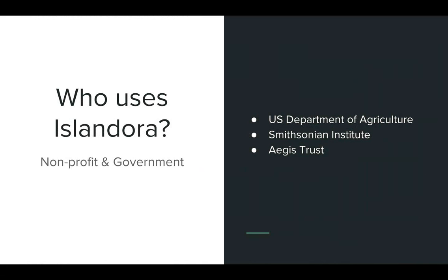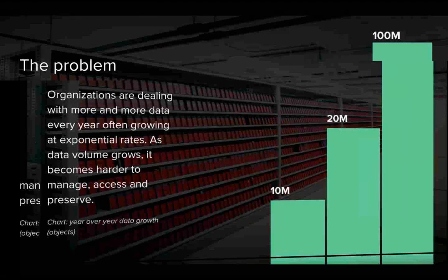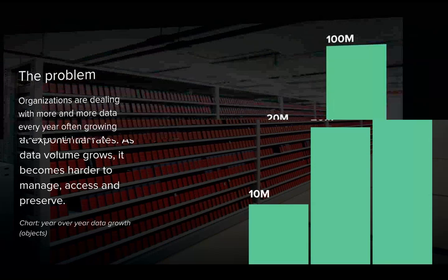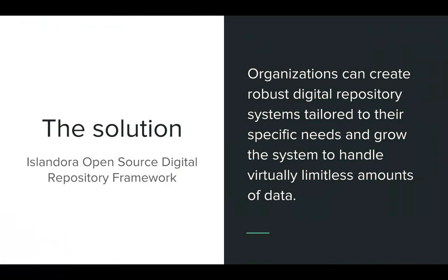Nonprofit organizations and government also use Islandora for the curation of digital assets — including the USDA, Smithsonian, and Presbyterian Historical Society. These organizations are using Islandora because they're dealing with more and more data every year, often growing at exponential rates. As data volume grows, it becomes harder to manage, access, and preserve. The solution is developing a digital curation process that includes an Islandora digital repository, which can be tailored to specific needs and grow to handle a virtually limitless amount of data.